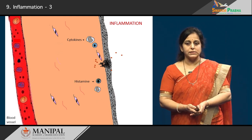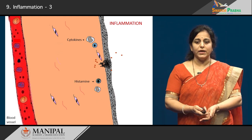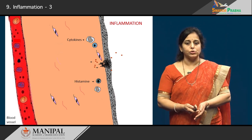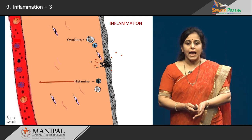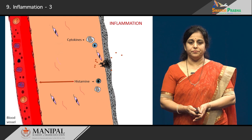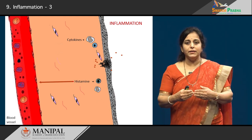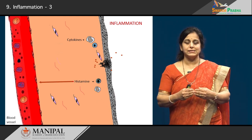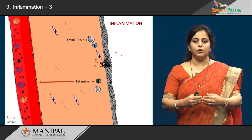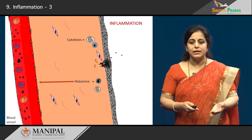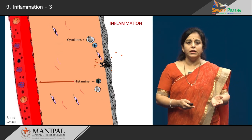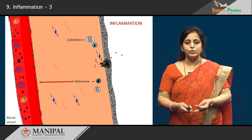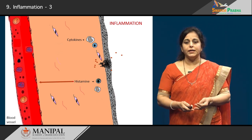The macrophages release a chemical called cytokines. At the same time, the microorganisms and the dead tissues also release various factors. The histamine released by the mast cells primarily acts on the blood vessels, causing vasodilatation. Normally the endothelial cells are closely opposed to each other, but histamine increases the gaps between these endothelial cells — what is called increased vascular permeability. At the same time, chemicals released by various cells act on the WBCs present in the circulation.